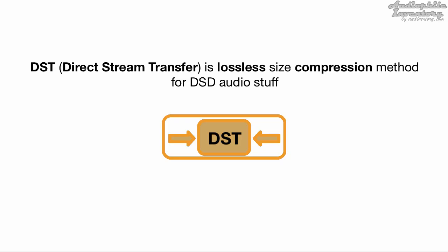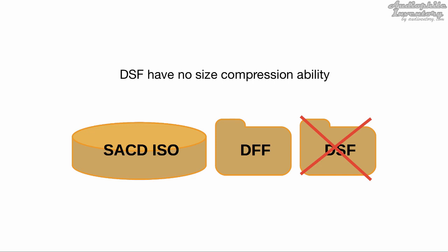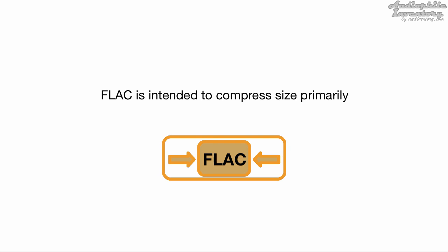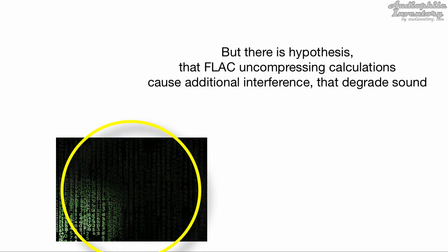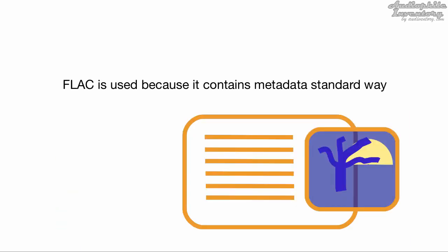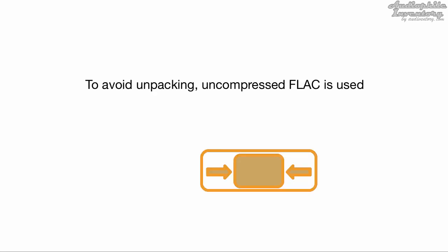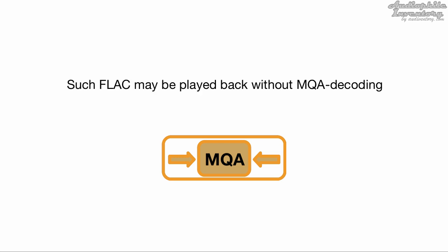Regarding size compression: DST, Direct Stream Transfer, is a lossless size compression method for DSD audio. It is implemented in DFF and SACD ISO files. DSF has no size compression ability. FLAC is intended to compress size primarily. There is a hypothesis that FLAC decompression calculations cause additional interference to degrade sound, but there is currently no known evidence for this. FLAC is also used because it contains metadata in a standard way. To avoid decompression, uncompressed FLAC is sometimes used. A FLAC file container can also include MQA compressed audio; such FLAC may be played back without MQA decoding.